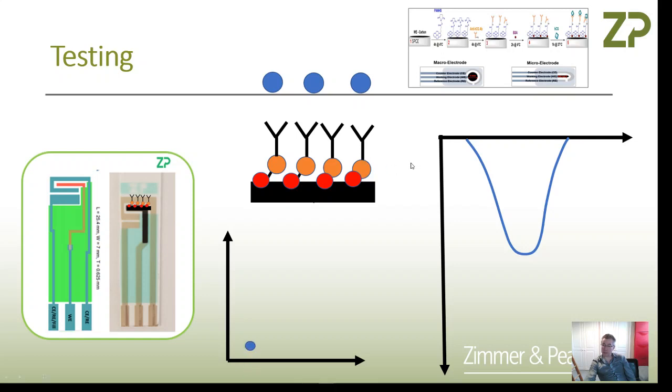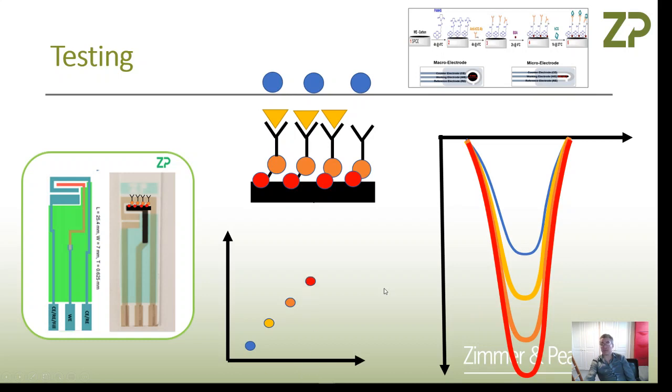Now, to make sure that this sensor, we basically report there's a concentration and we get a signal. Then we add in some of the protein and we rerun the differential pulse voltammetry and we get a new height and we plot that. Then we add in some more protein and we get a new height and we can plot that. So now we start to see if we have concentration signal that we have a signal versus concentration.